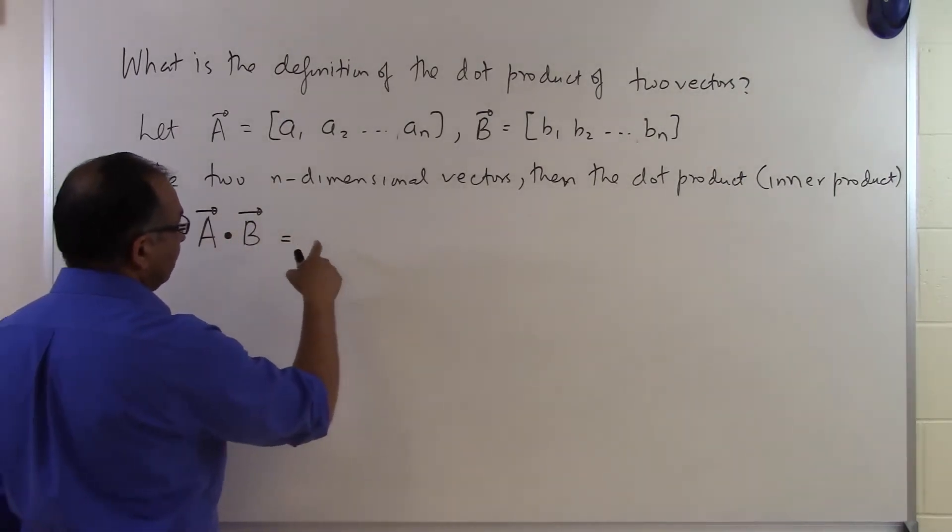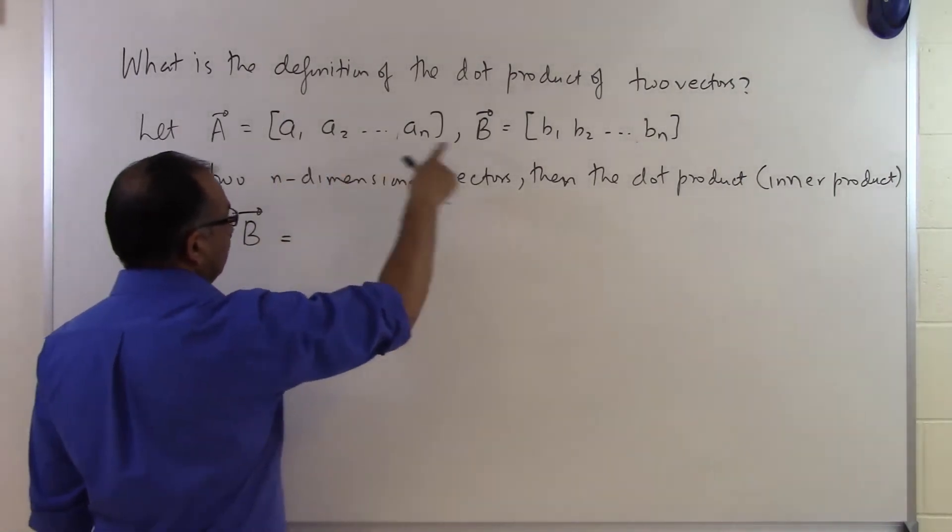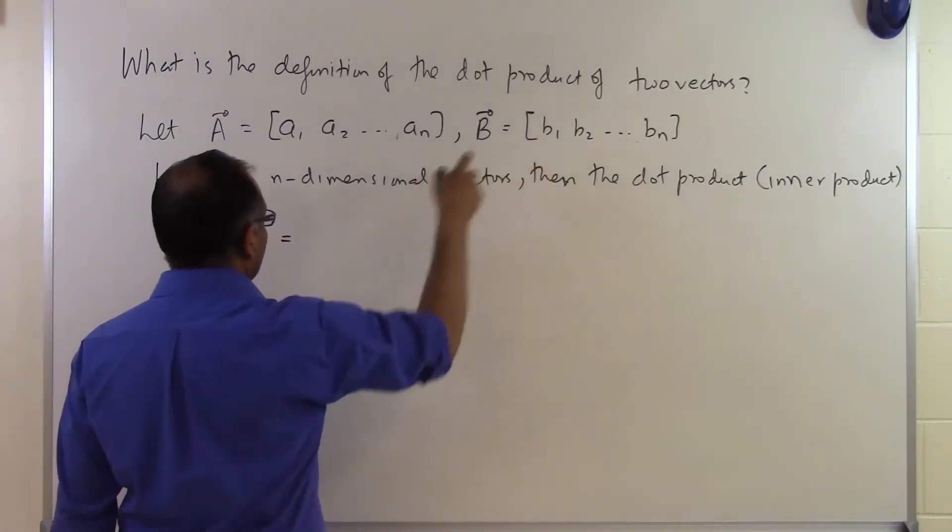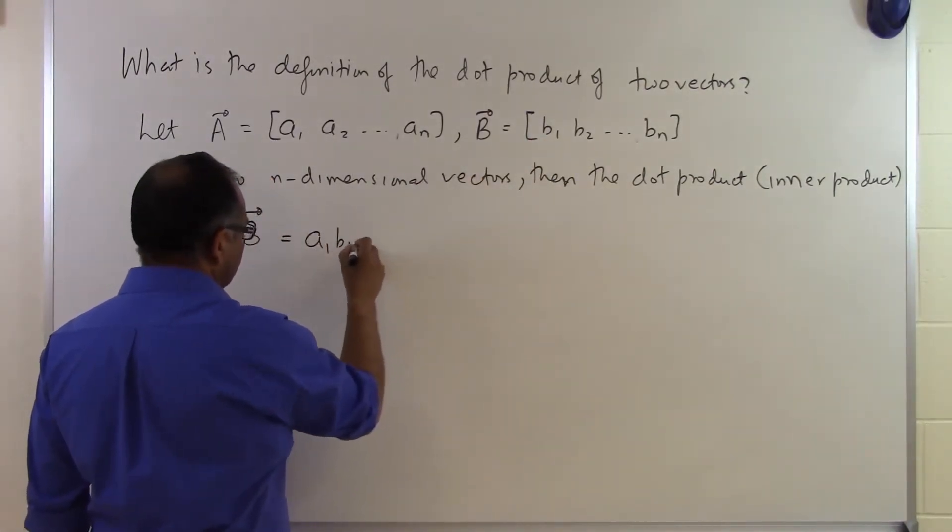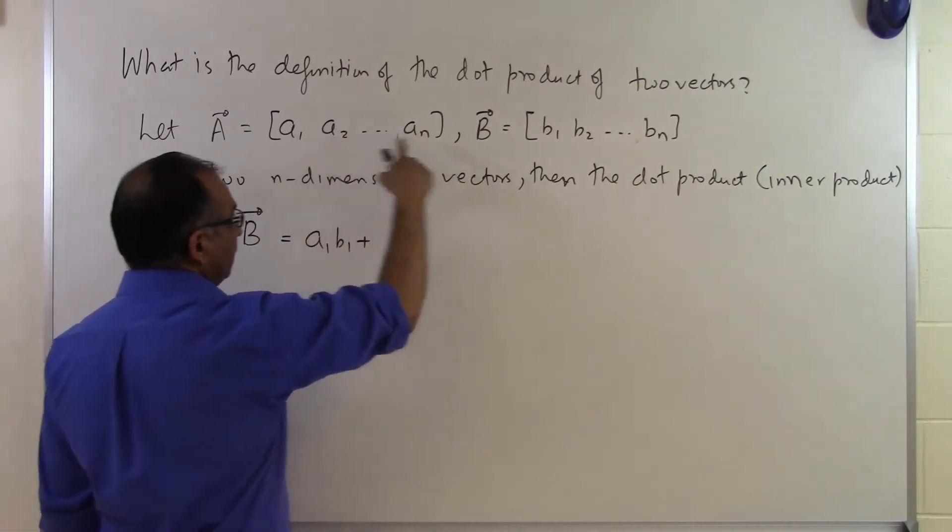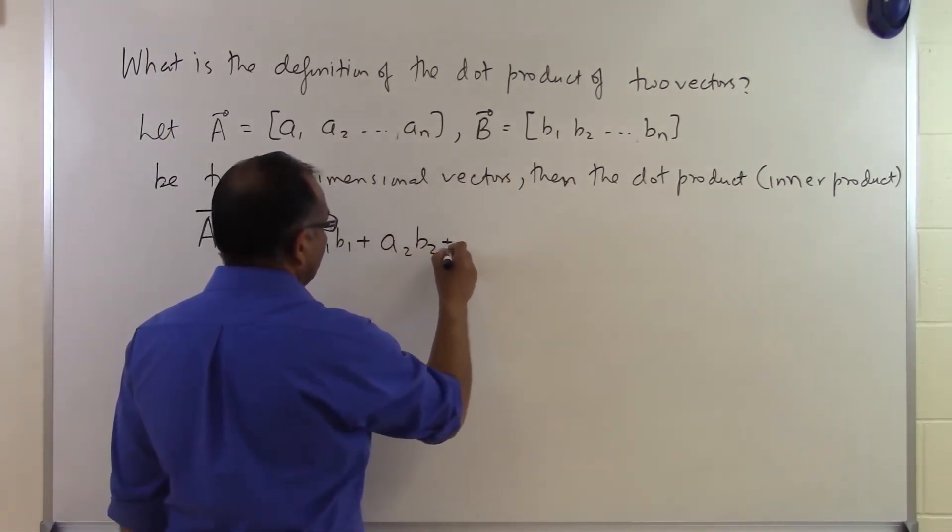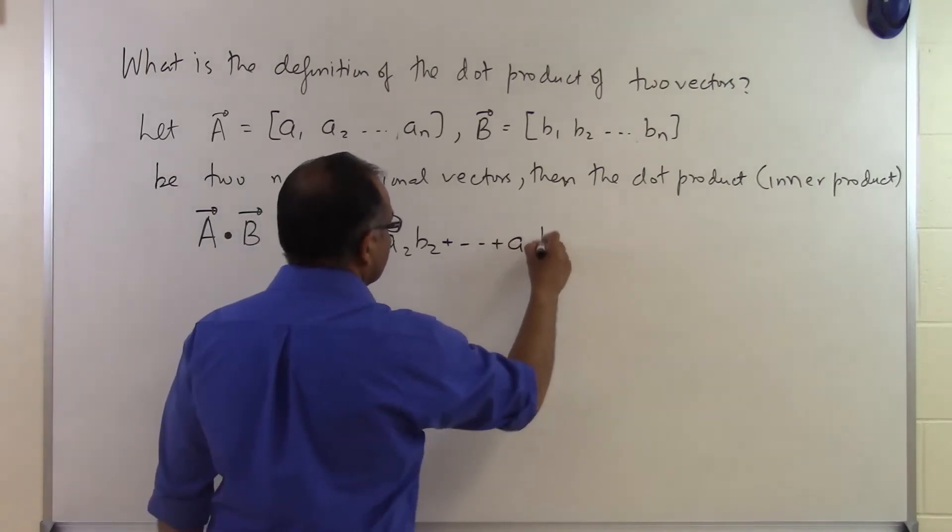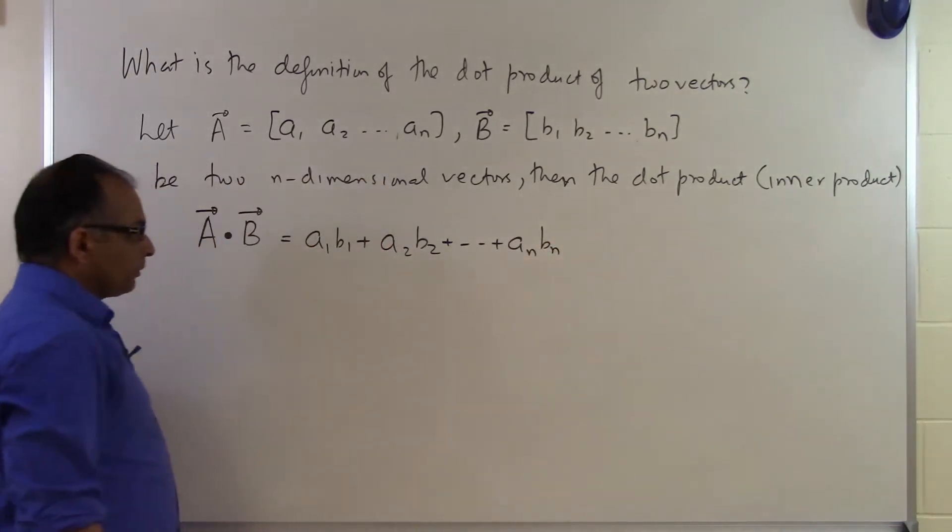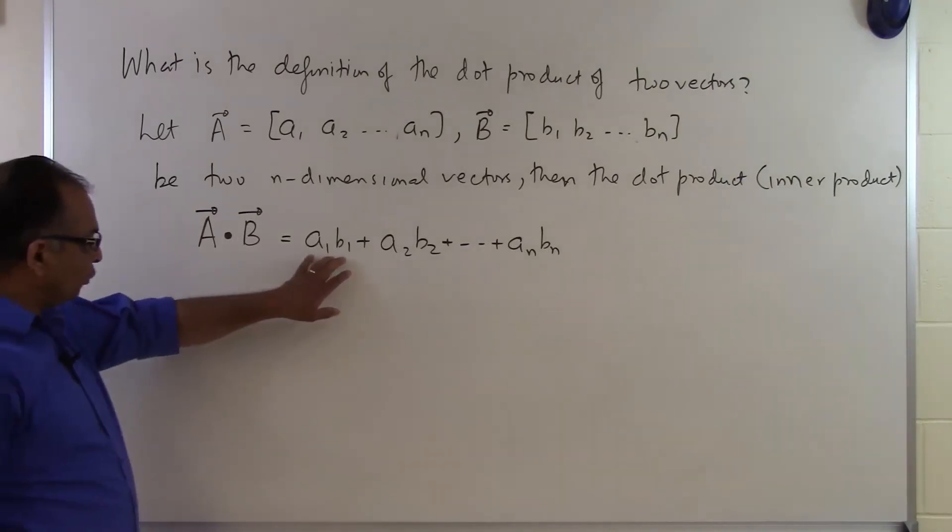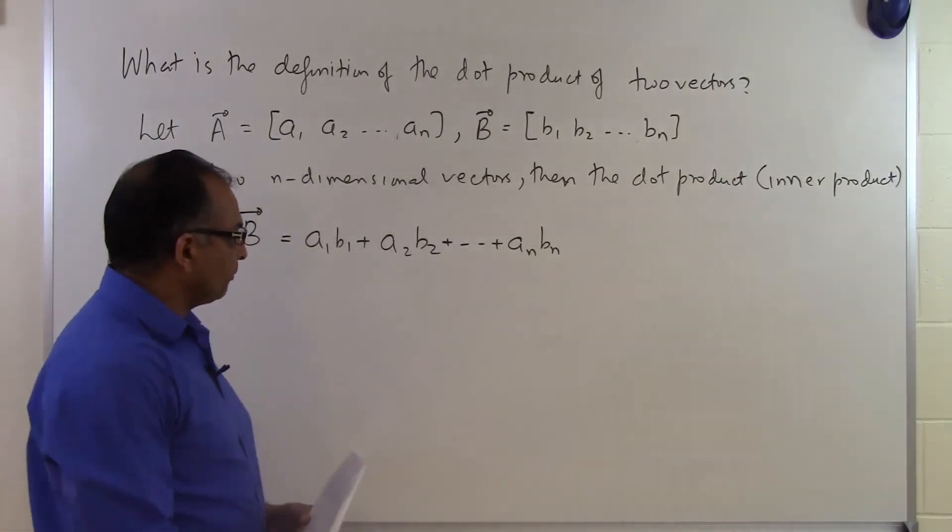It's simply multiplying the first component of each: a1 times b1, then the second components: a2 times b2, and you keep doing this till the end. Then you add all of them up. So you're multiplying the corresponding components and adding them.